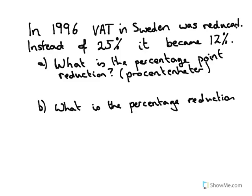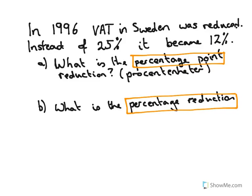This is a question about the differences between percentage points and percentage reduction, or percentage increase, or any sort of percentage change. In 1996, Sweden decided to change the amount of tax on foodstuffs. It used to have the standard tax rate of 25%, but they decided that food is pretty essential and it should have a lower tax rate.